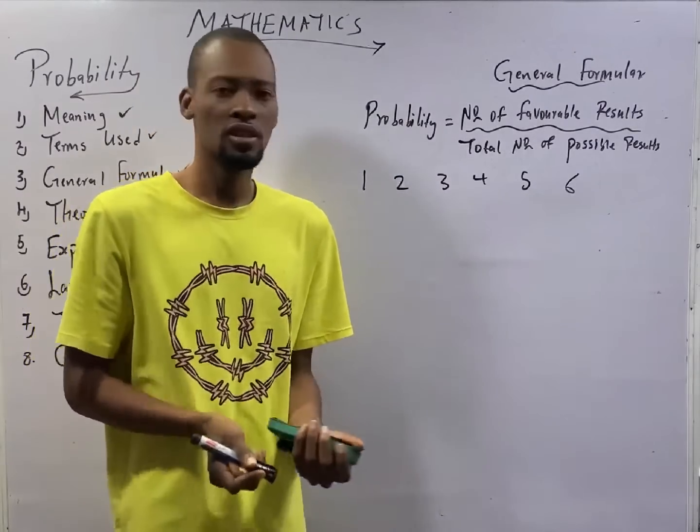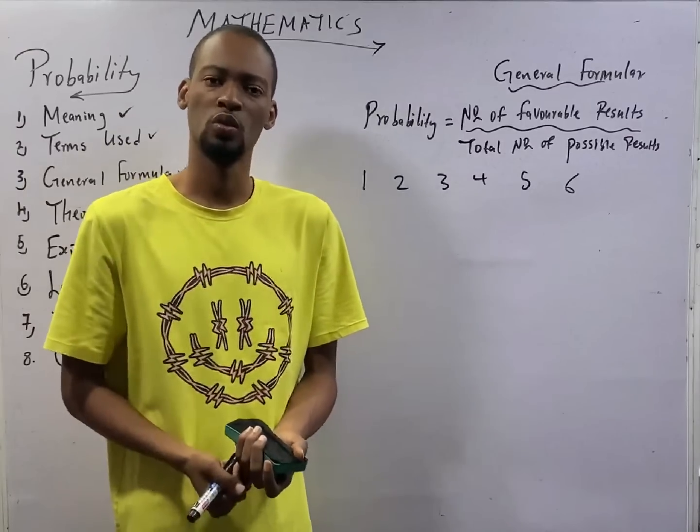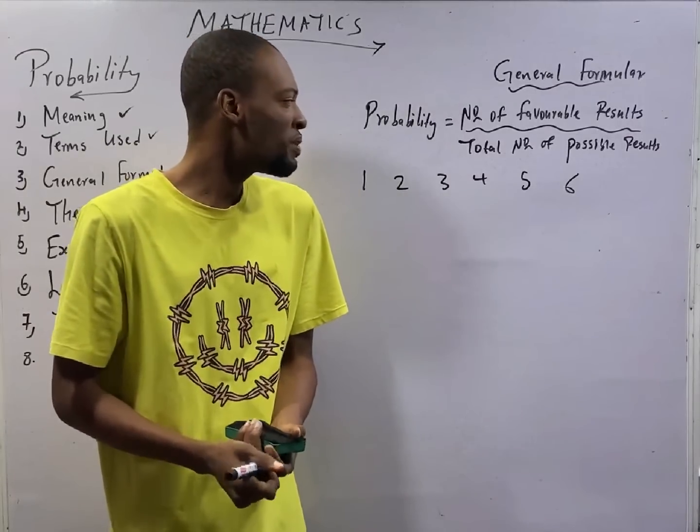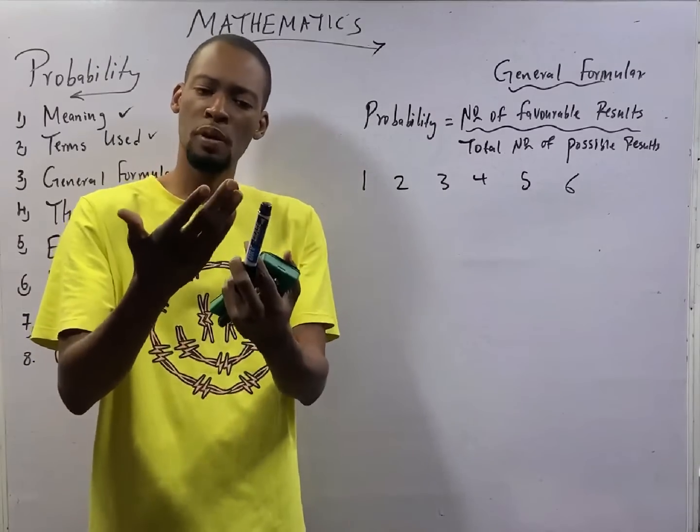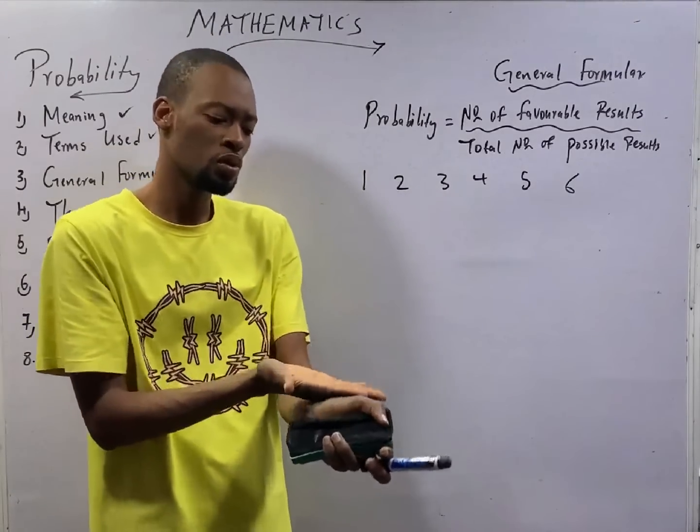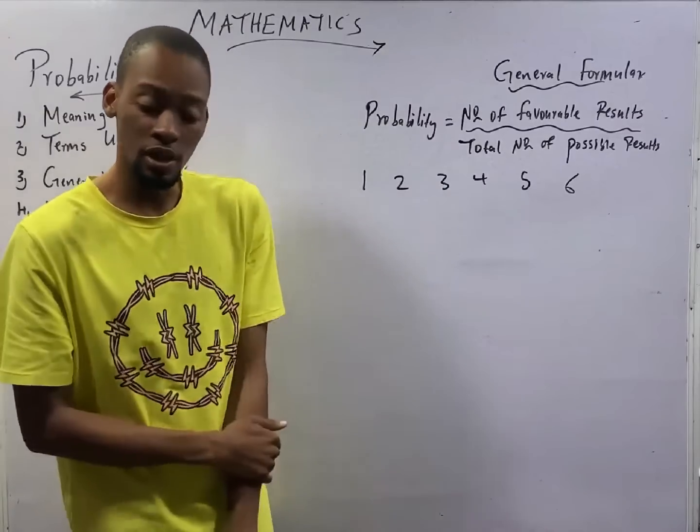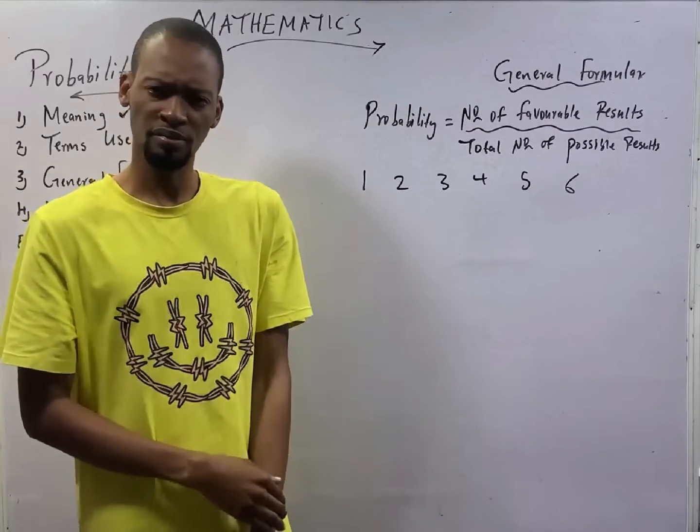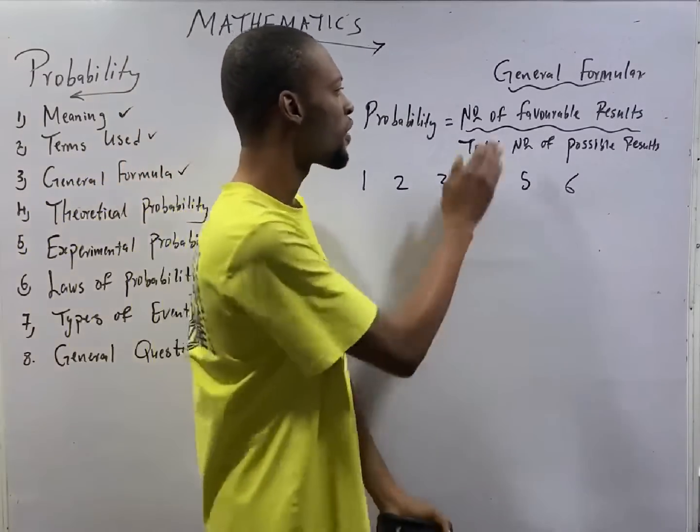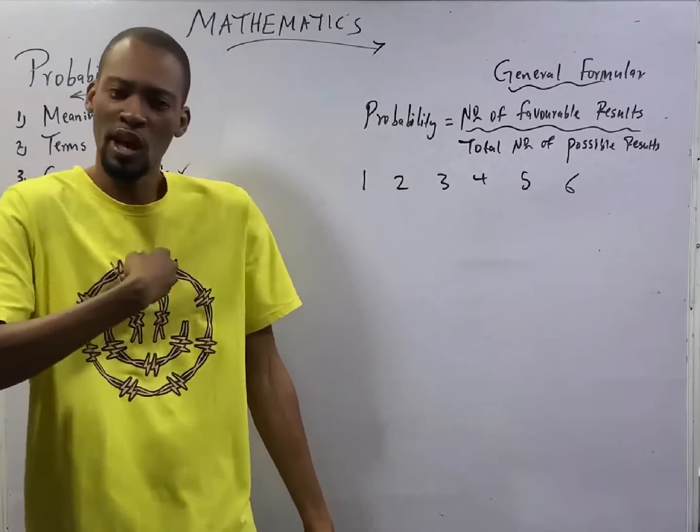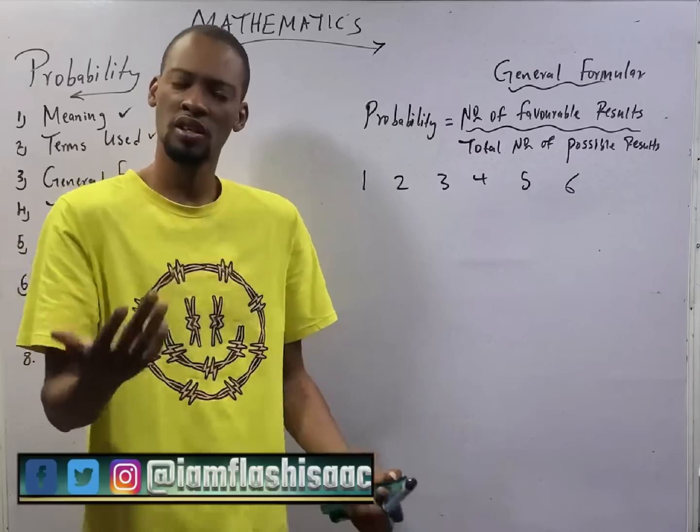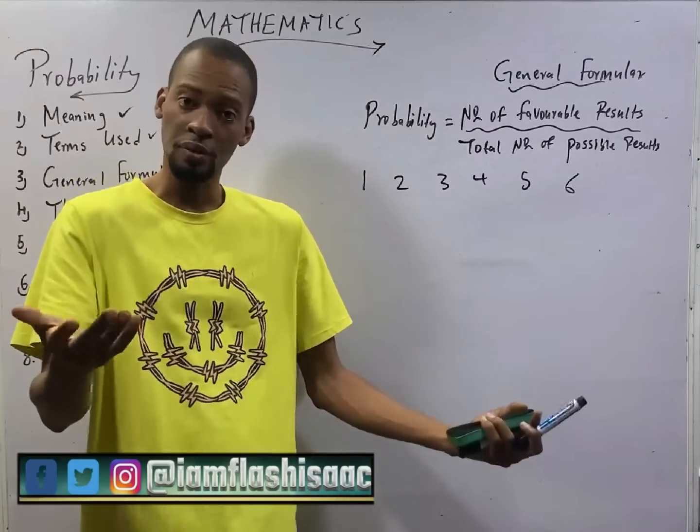If I say a die was tossed once, what is the probability of getting a 3? Which means, what is the probability that 3 will show up like this? For you to say, I got 3. It is simply the number of favorable results. Favorable results refer to the result you are expecting or the result that you want, and that is 3. So, the number of favorable results is only 3.